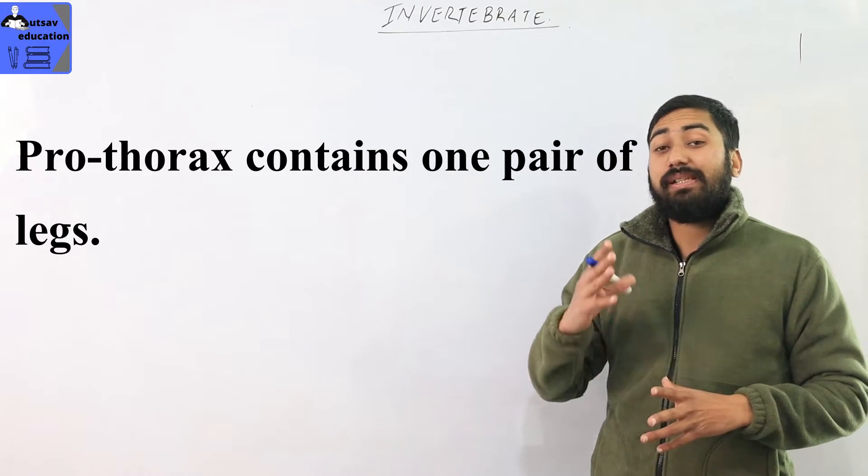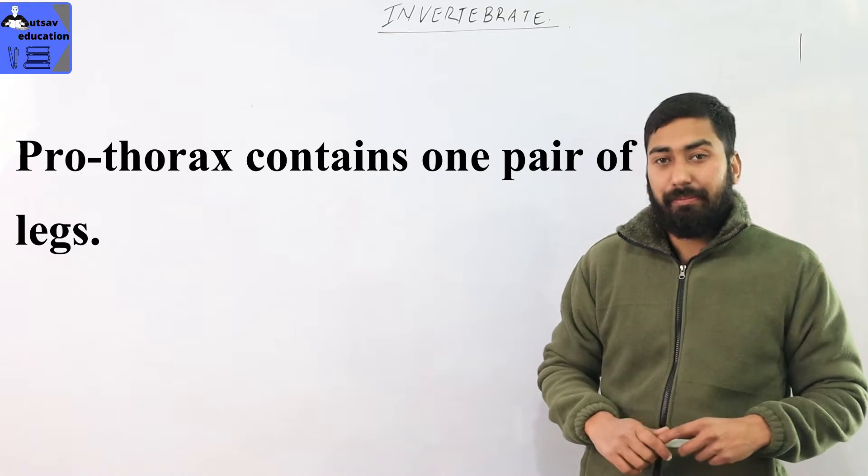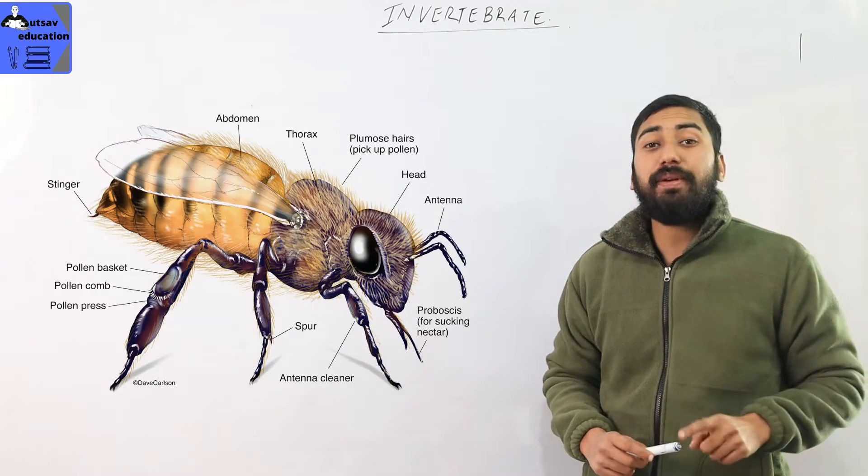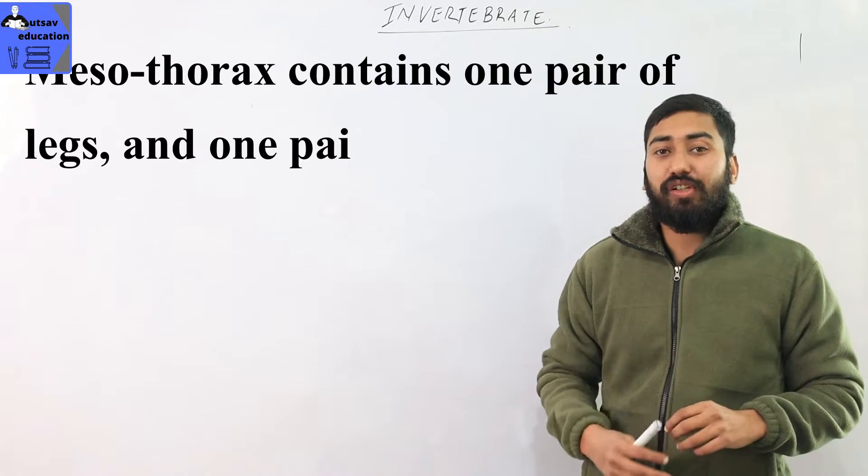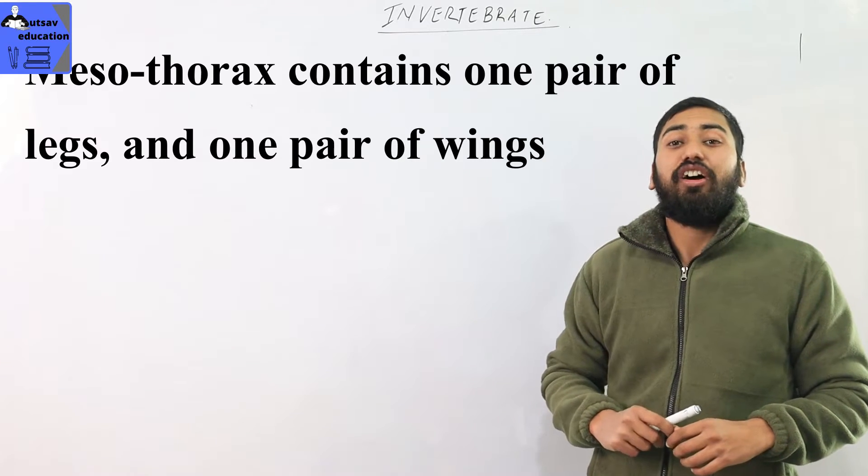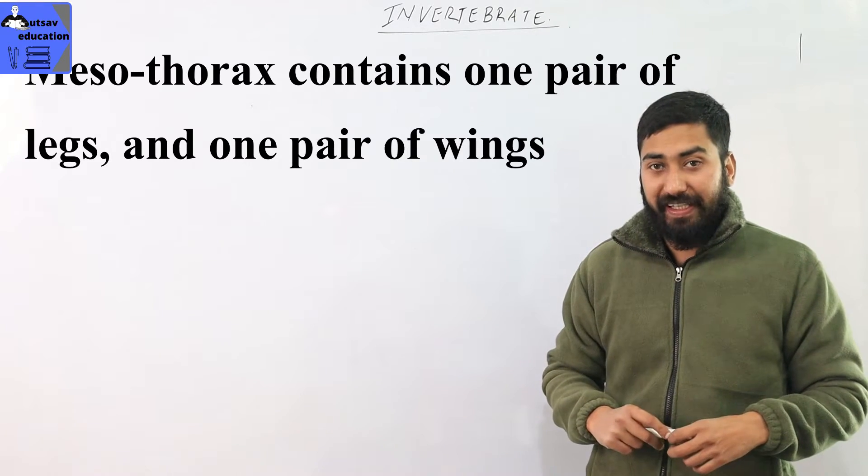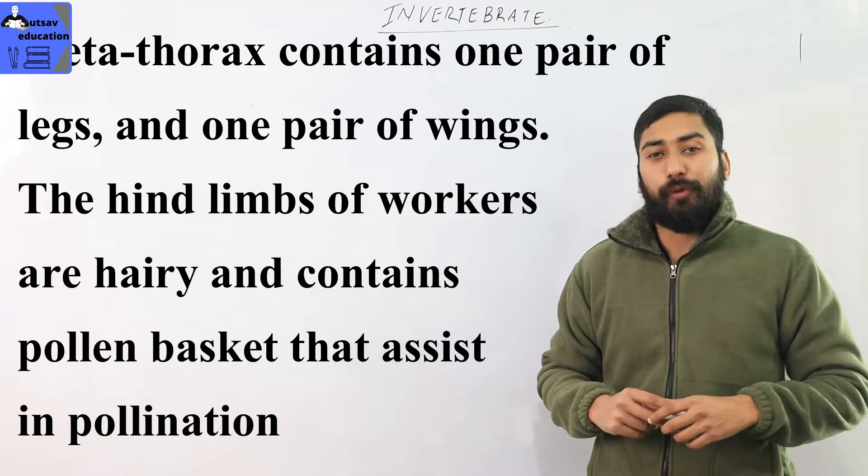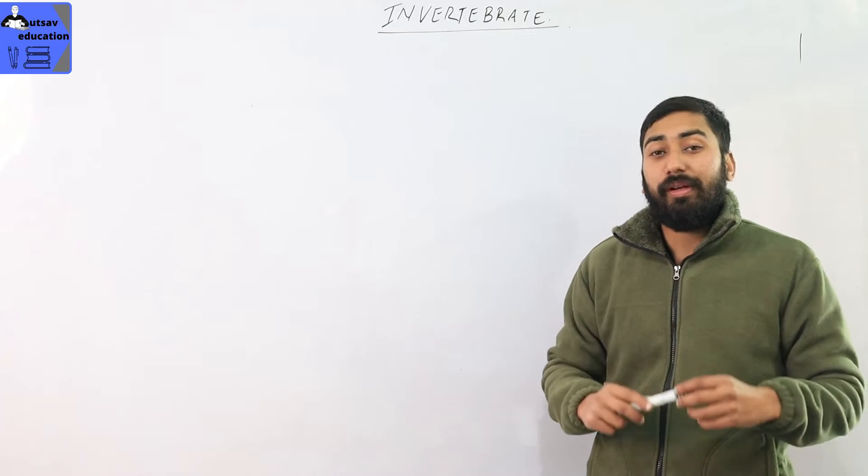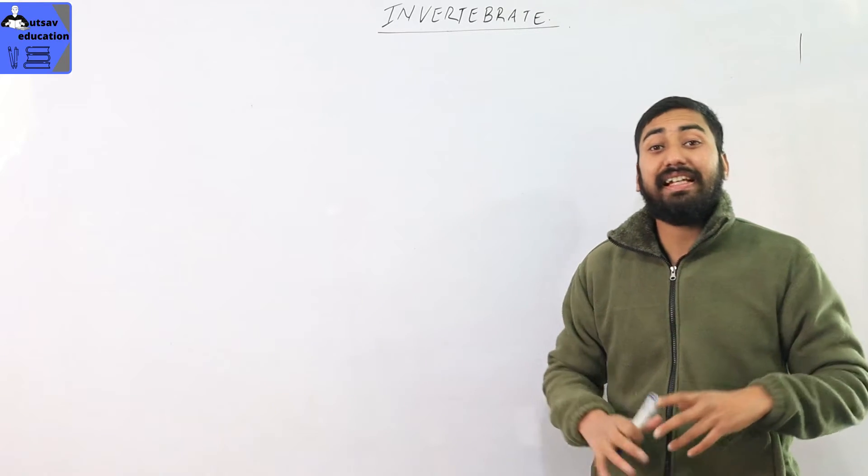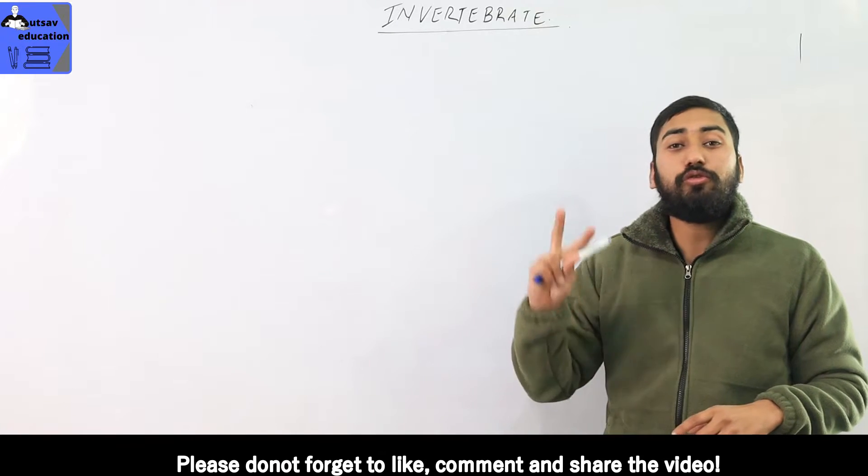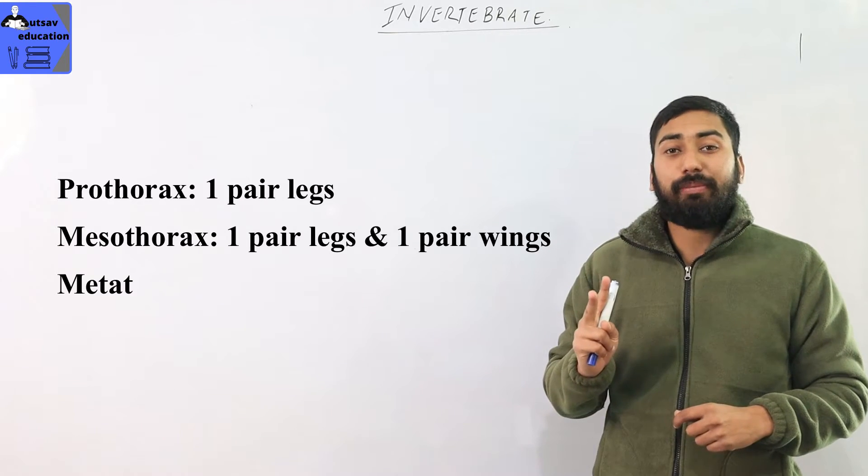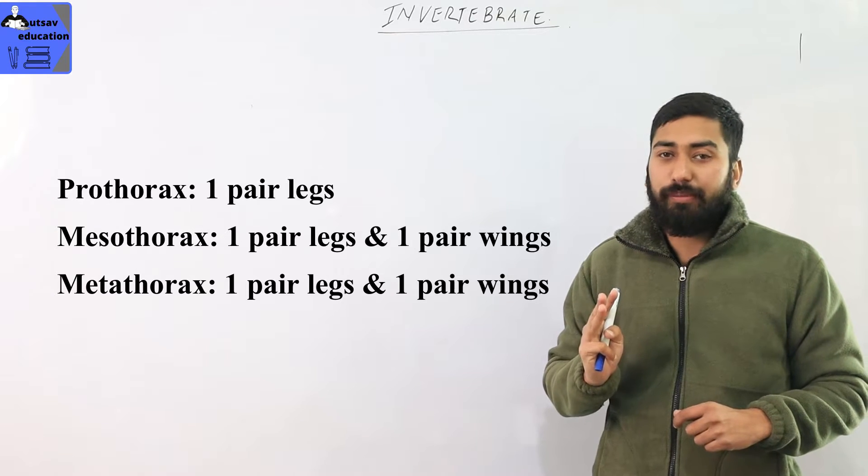Prothorax has one pair of legs. Mesothorax has one pair of legs and one pair of wings. Metathorax has one pair of legs and one pair of wings. In total, there are three pairs of legs and two pairs of wings.